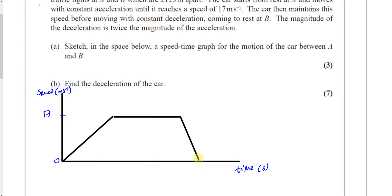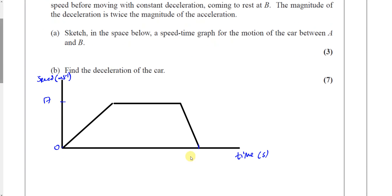The total time is 170 seconds. So this is 170 seconds altogether. That's all the information we can put in the speed time graph — the maximum speed it reaches, the time it takes altogether, and the deceleration section has to be steeper than the acceleration section because it's twice the magnitude. That's part A done.